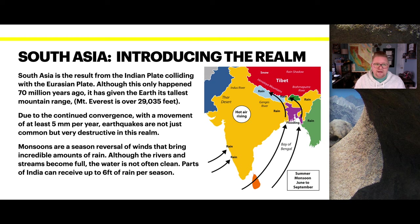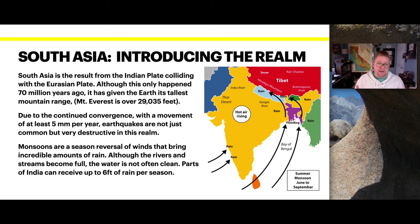South Asia is the result of the Indian Plate colliding with the Eurasian Plate. Although this happened 70 million years ago, it has certainly given the Earth its tallest mountain range and point, Mount Everest at over 29,000 feet. Due to the continued convergence, with a movement of at least five millimeters per year, earthquakes are not just common but very destructive in this realm.